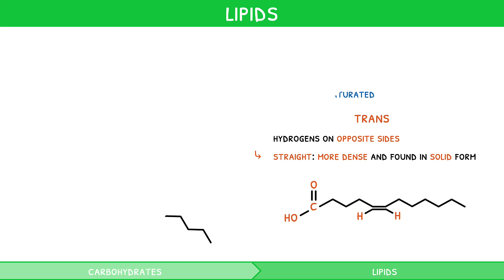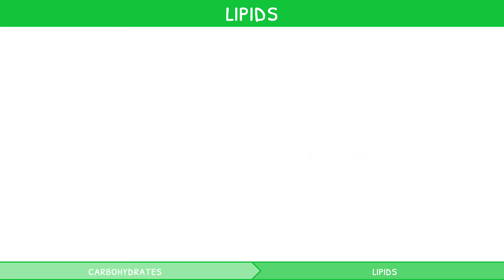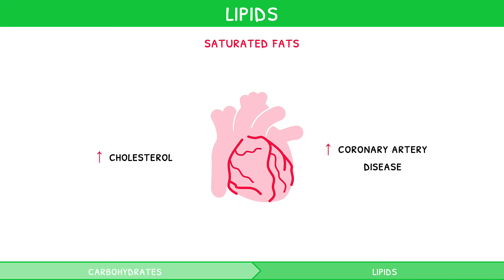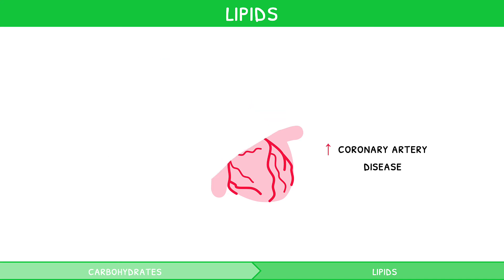These isomers are often discussed in the context of human health. Saturated fats, and by extension trans fats, increase cholesterol and so increase the risk of coronary heart disease. Therefore, unsaturated fats are considered to be healthier. However, the evidence supporting this guidance is debatable.